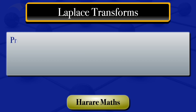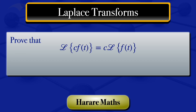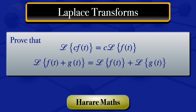In this tutorial, we are going to prove that the Laplace transform of C multiplied by F of T equals C multiplied by the Laplace transform of F of T, where C is a constant. And for the second part, we are going to prove that the Laplace transform of F of T plus G of T equals the Laplace transform of F of T plus the Laplace transform of G of T.